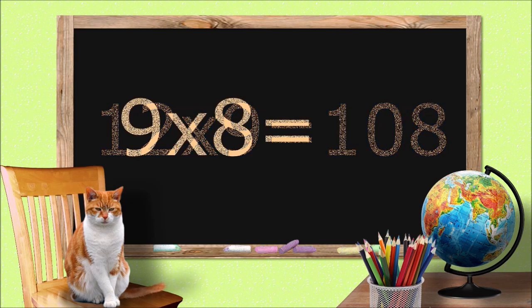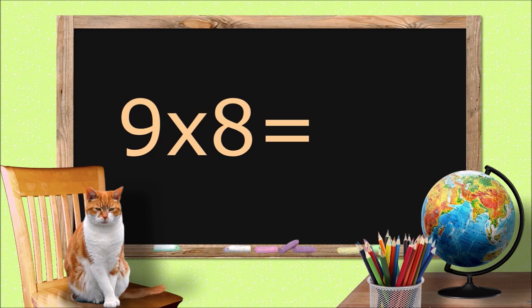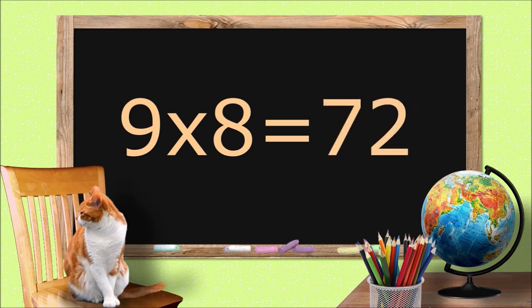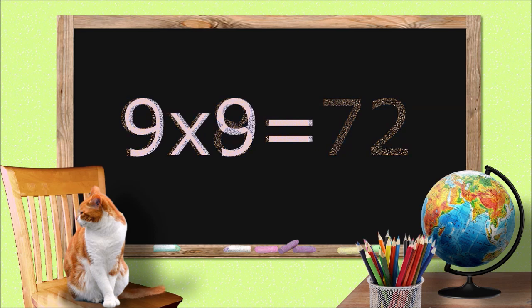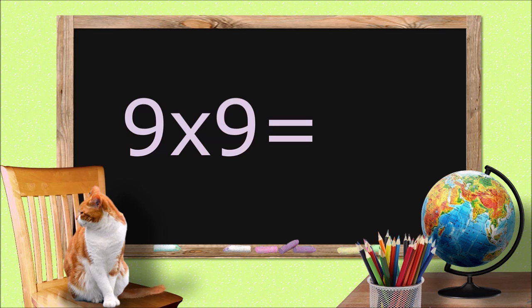9 times 8 equals 72. 9 times 9 equals 81.